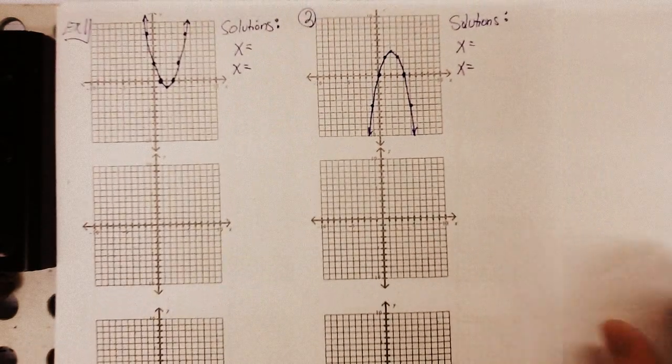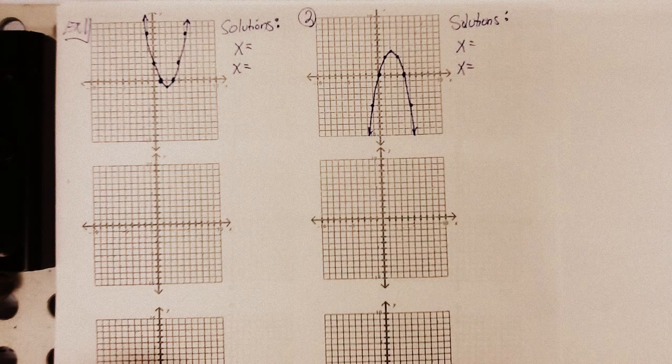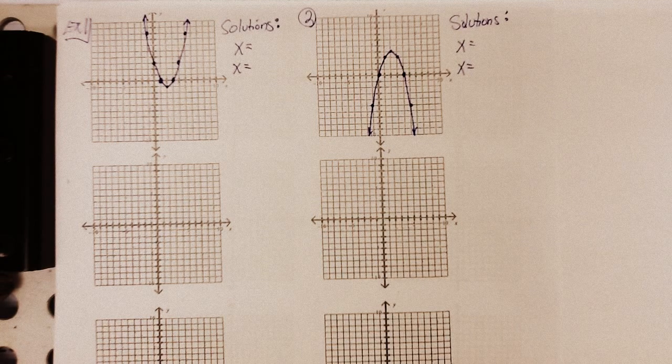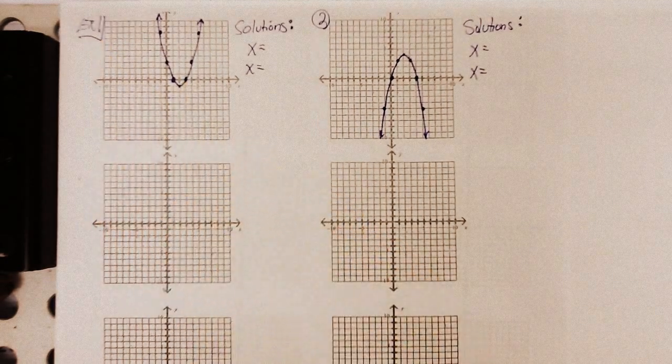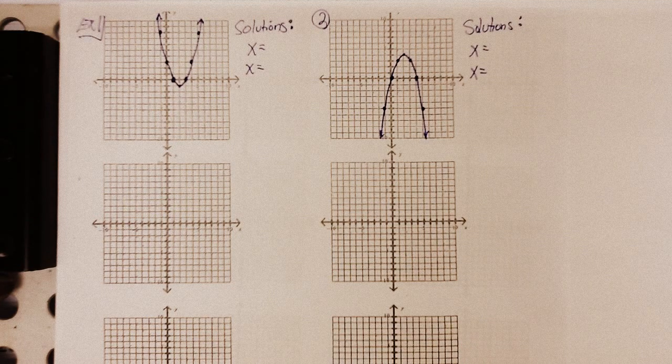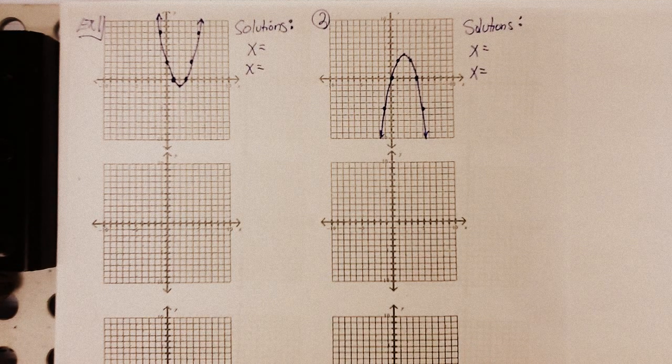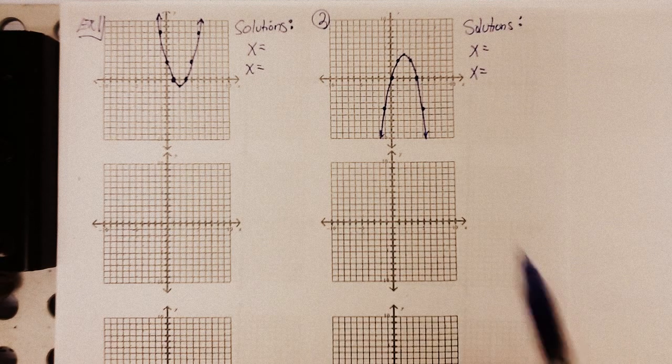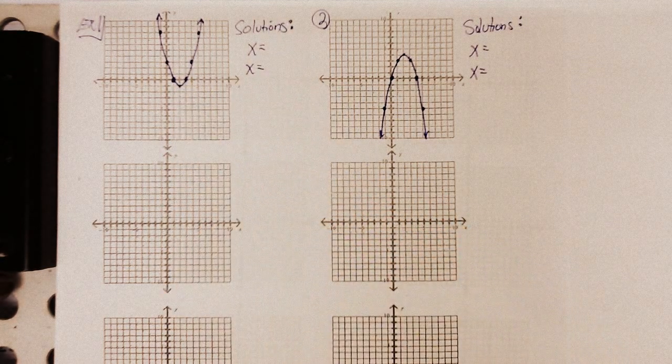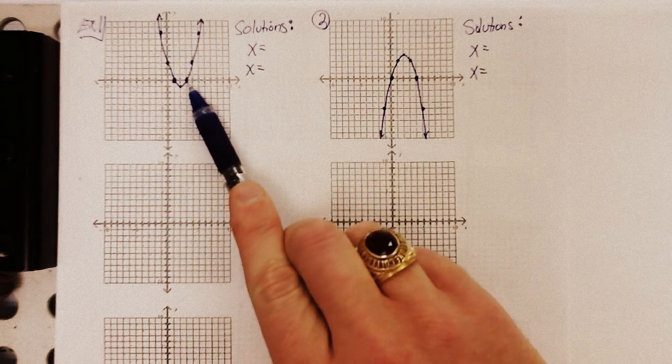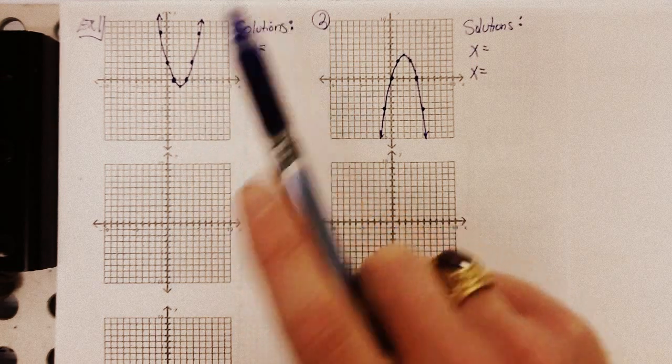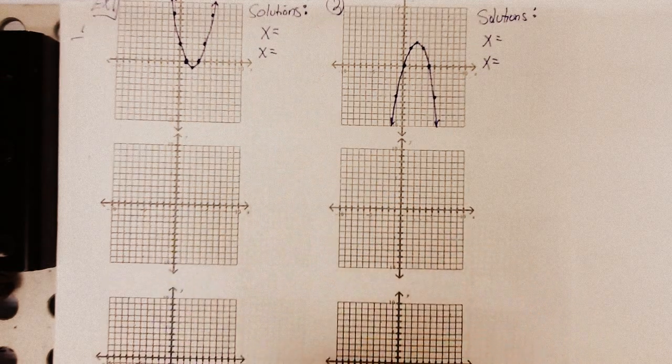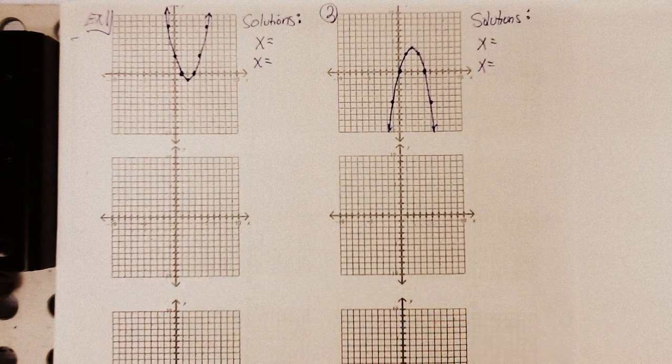The first thing I'm going to look at is just a couple graphs. And example one, we just look at a graph, and we come up with a couple solutions. Again, keep emphasizing this point, solutions, zeros, roots, they all mean the same thing. They're all x-intercepts. Okay? An x-intercept can be known also as a solution, a zero, or a root. You'll see all those terms used interchangeably.